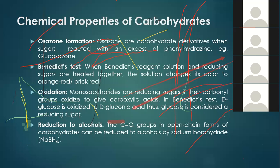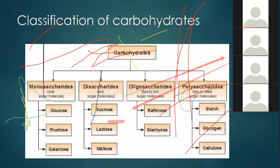Moving to classification of carbohydrates: they can be classified as monosaccharides (one sugar molecule), disaccharides (two sugar molecules), oligosaccharides (two to ten sugar molecules), and polysaccharides (more than ten sugar molecules). Examples of monosaccharides: glucose, fructose, and galactose. Examples of disaccharides: sucrose, lactose, and maltose. Examples of oligosaccharides: raffinose and stachyose. Examples of polysaccharides: starch, glycogen, and cellulose.